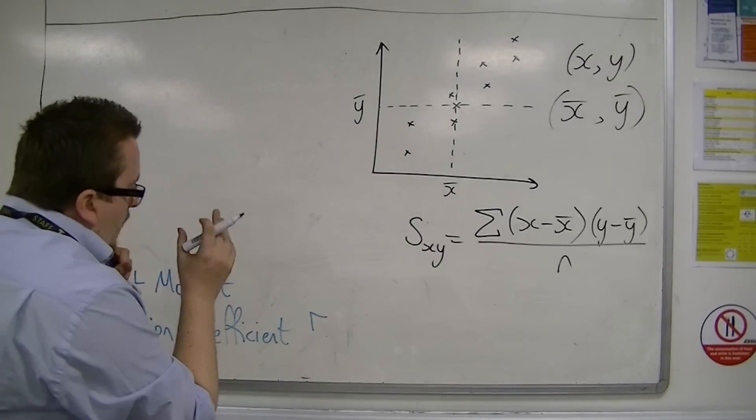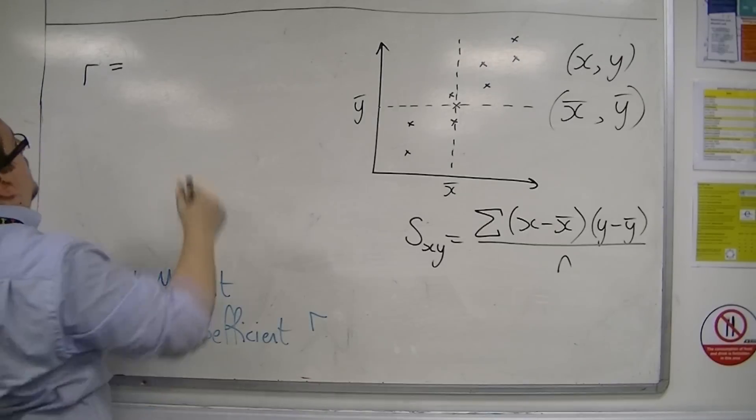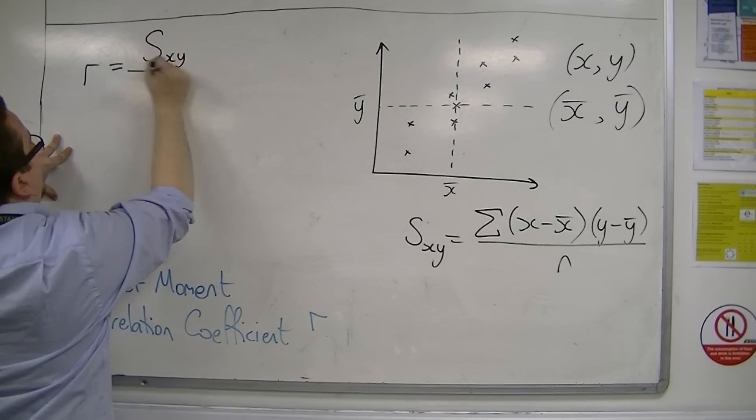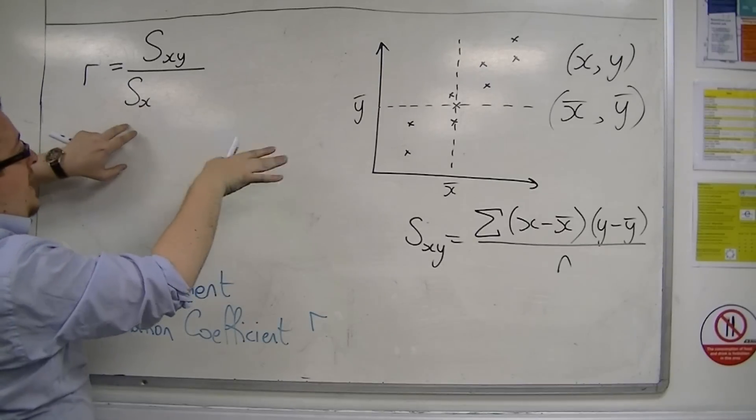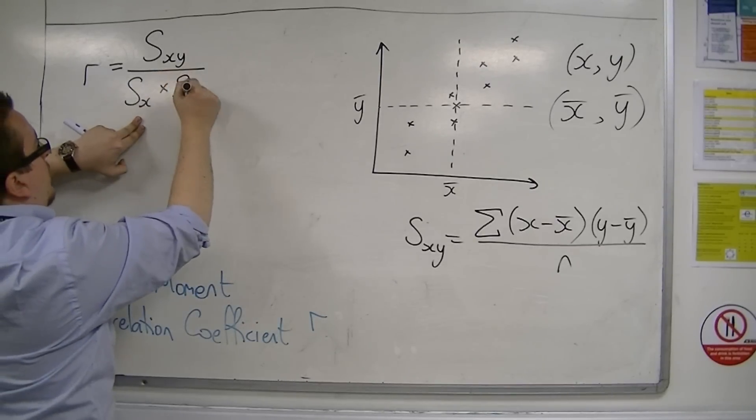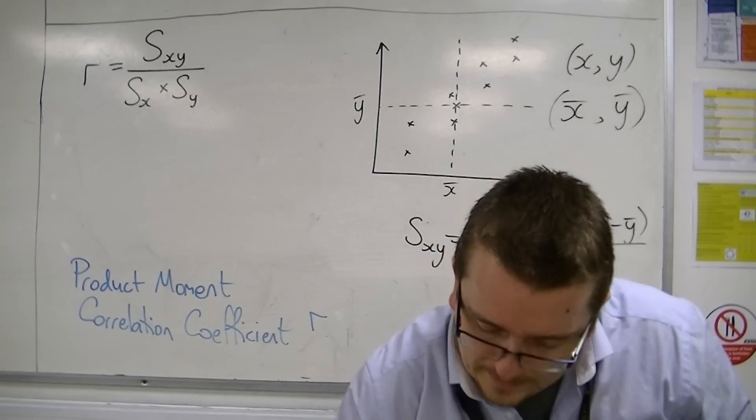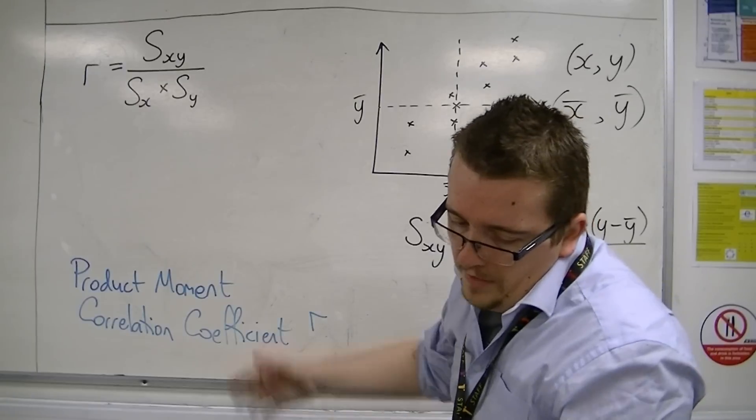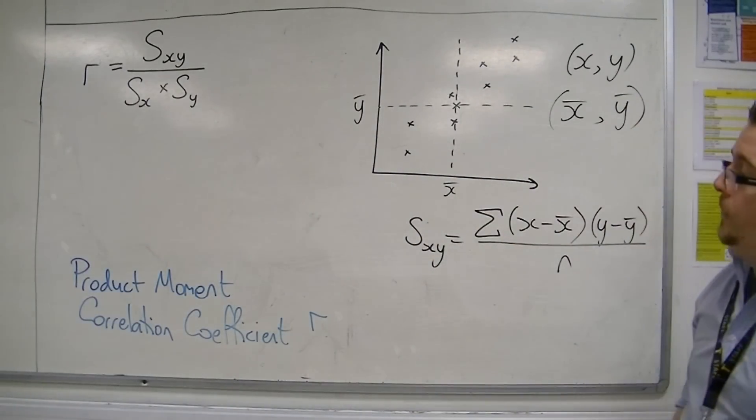The actual value of r is found by dividing the covariance by the standard deviation of the x-values multiplied by the standard deviation of the y-values. So this is your product moment correlation coefficient and how it is determined.